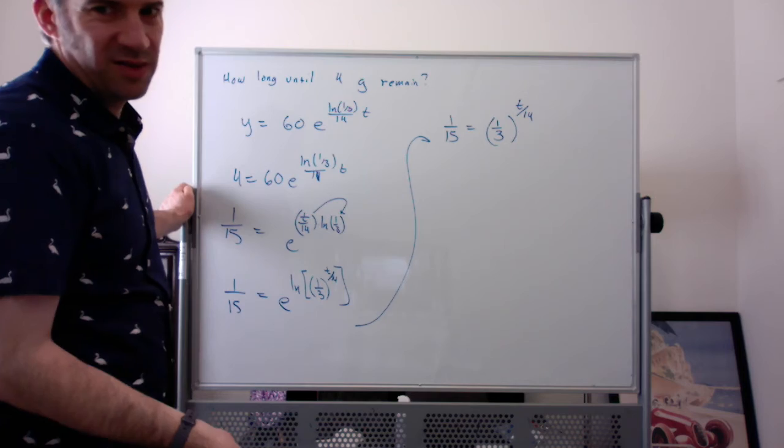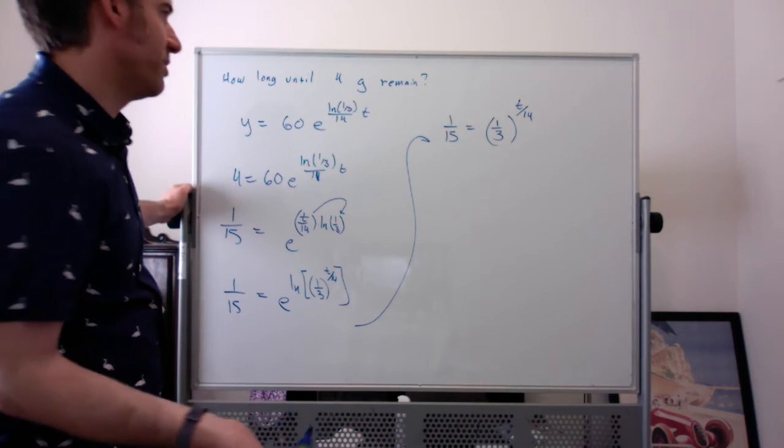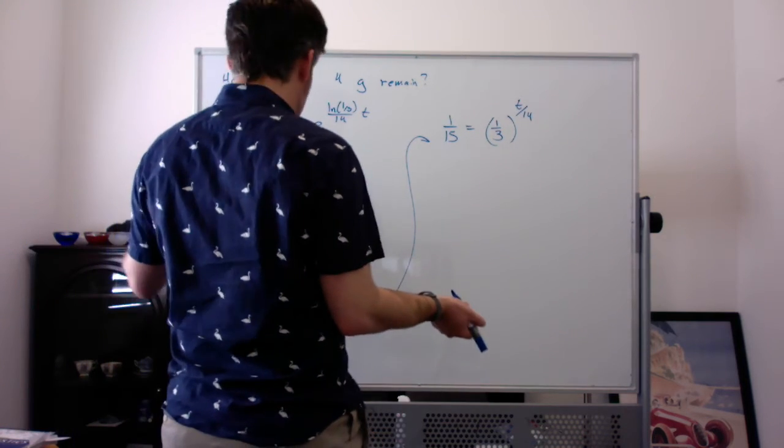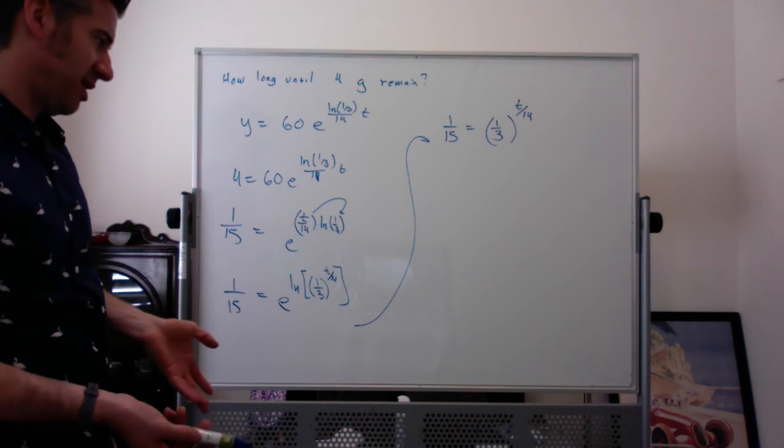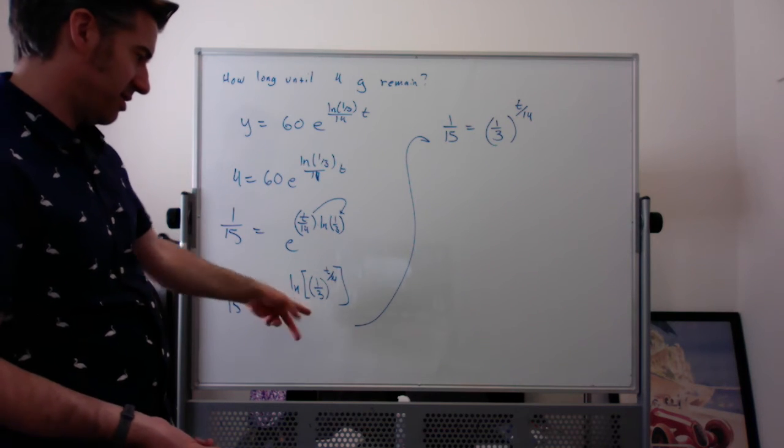We still have to solve for t, so this might not be super helpful. But, well, so solving for t, the thing with solving for t, I would want to take the natural log of both sides. It would kind of give me back to having this anyway. But if you didn't want to do that, you could take the log base 1/3 of both sides.